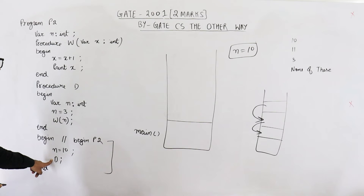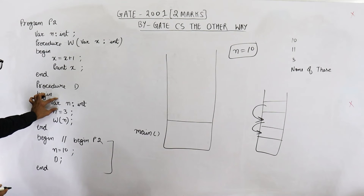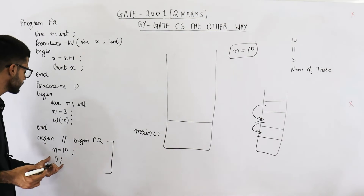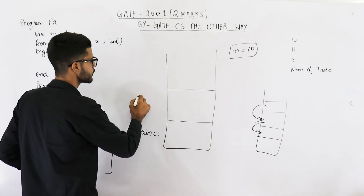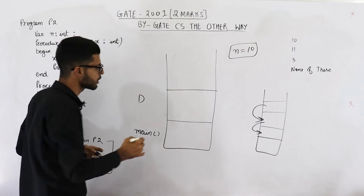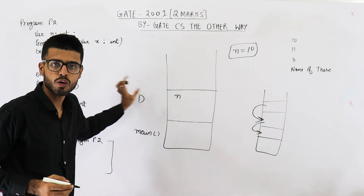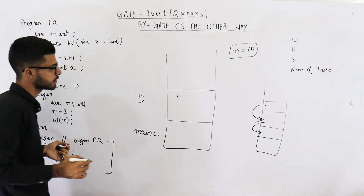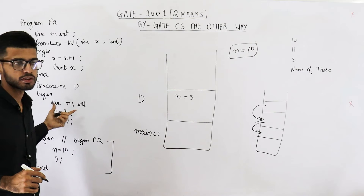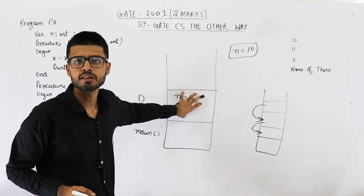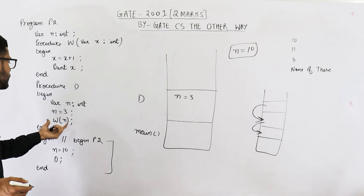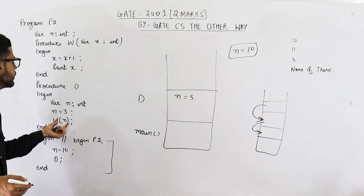In the next line, d is called. Inside function d, the first line is 'var n: int', declaring a local variable n of integer type. When you call function d, an activation record for d is pushed onto the stack, and the local variable n gets memory in that activation record. The next line assigns value 3 to this local n — easily resolved by dynamic scoping since n is found in d's own activation record. Then 'w(n)' means call function w and pass n as a parameter.